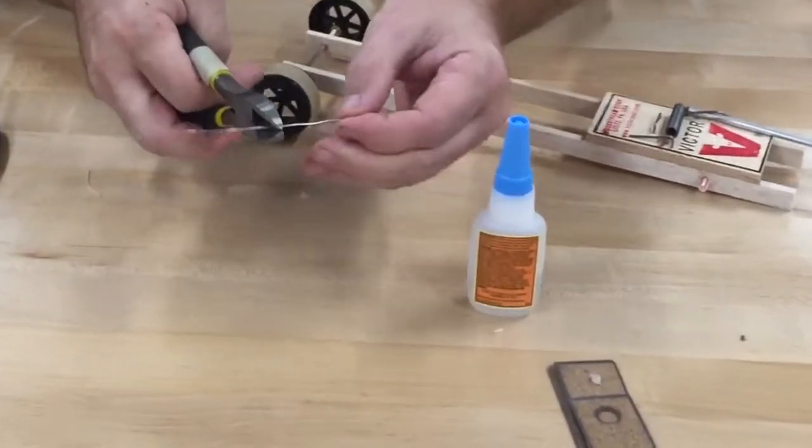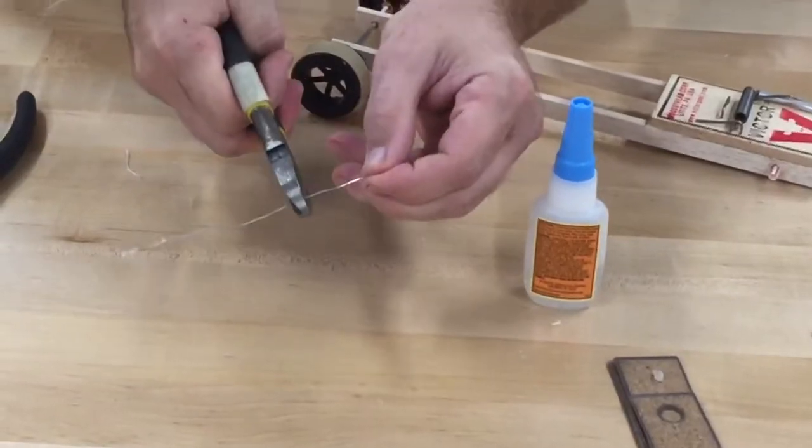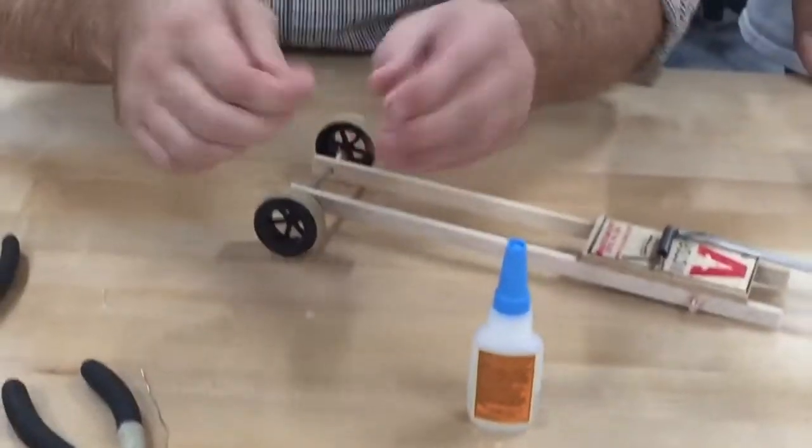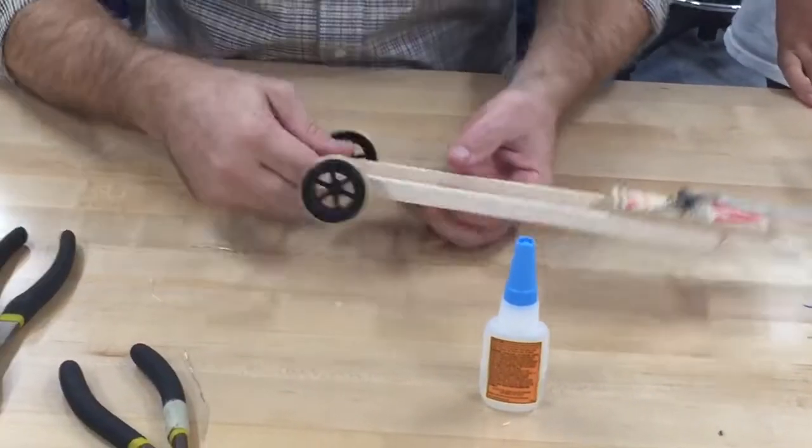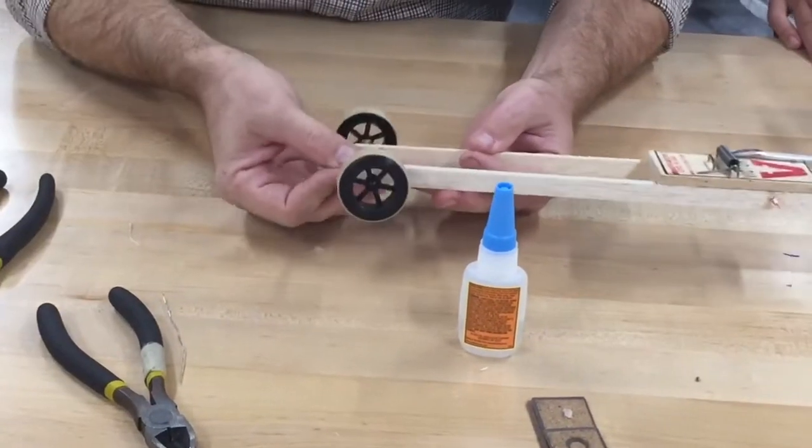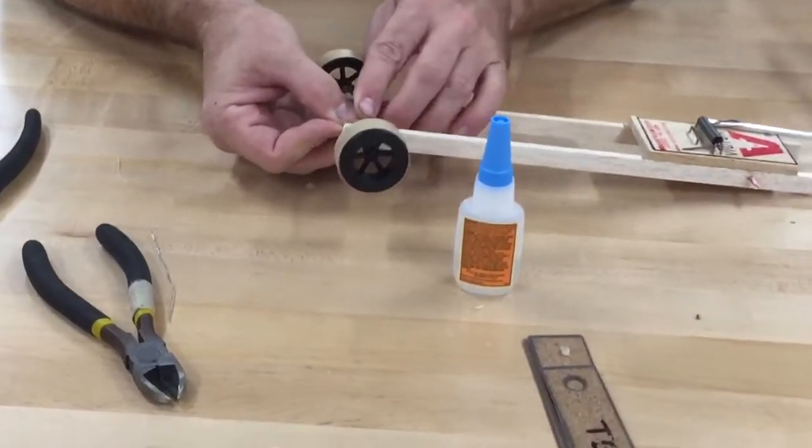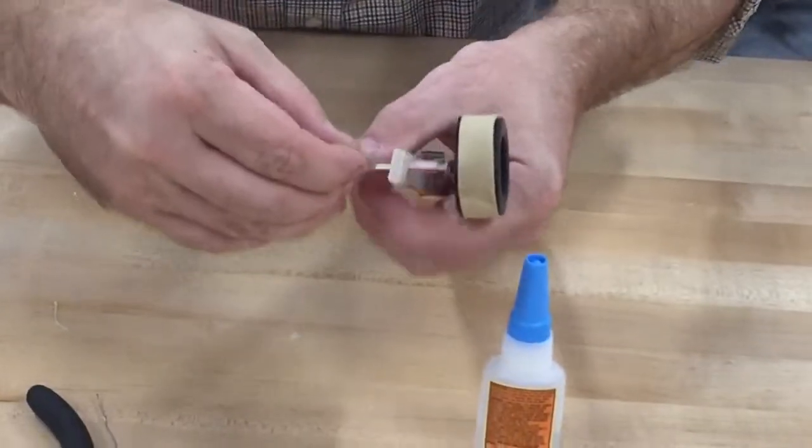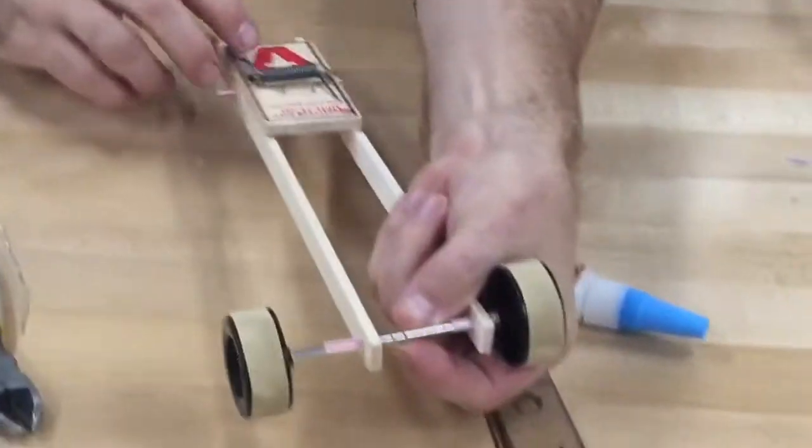This is going to go about halfway on the axle, and you'll notice that on this side, this is the side where the lever arm is at. This is the side where the string is going to come, so I want to have it to that side.